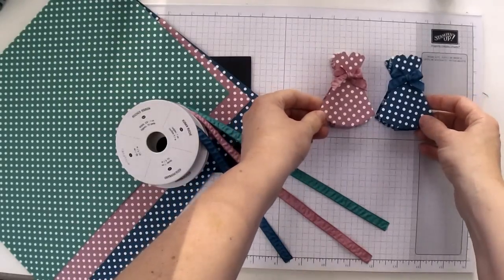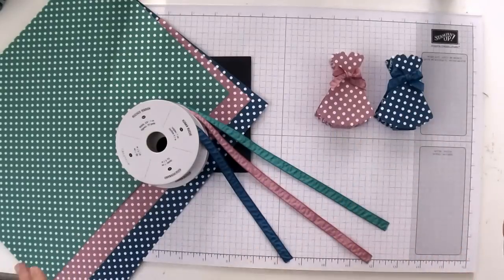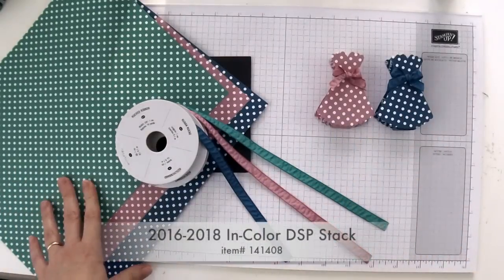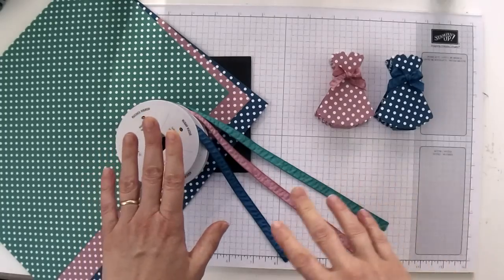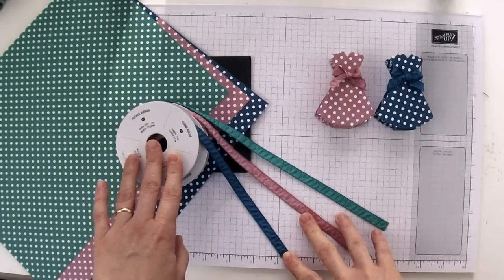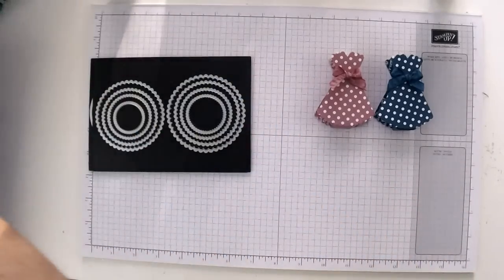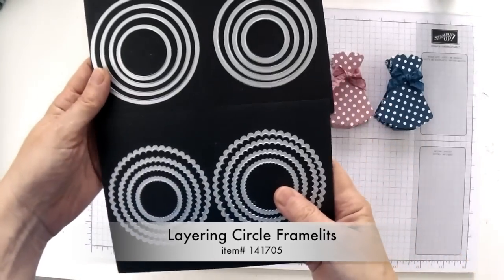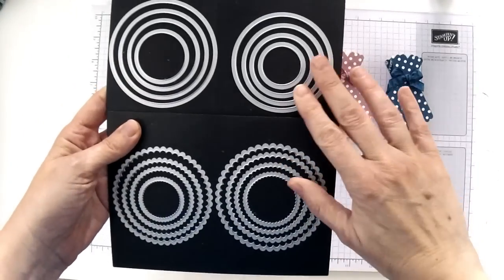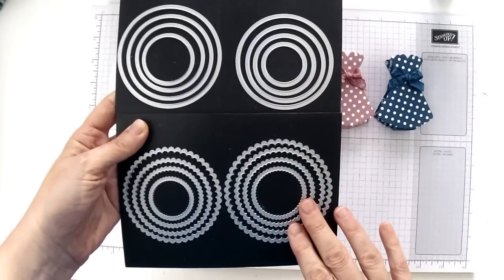It's this adorable little lip balm holder and we'll be using the 2016-2018 in color paper stack as well as the matching ruched ribbon and the layering circles framelits. They come both in the smooth circles and the scalloped circles.